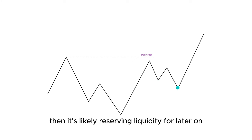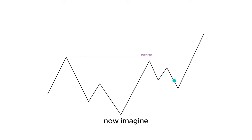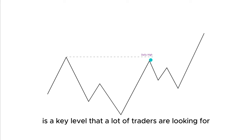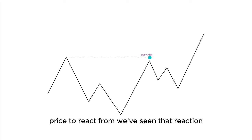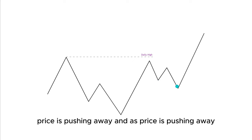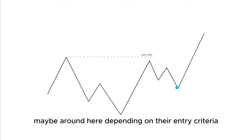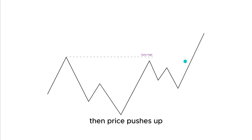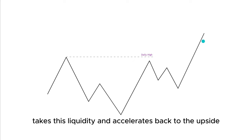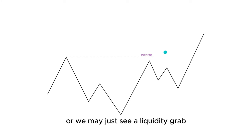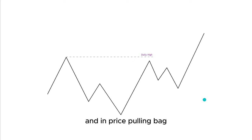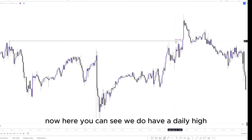If we see price come very close towards this daily high and push away, it's likely reserving liquidity for later on. Imagine this daily high is a key level that a lot of traders are looking for price to react from — we've seen that reaction and price is pushing away. As price pushes away, early sellers are entering the market in their positions, maybe around here or here depending on their entry criteria. Then price pushes up, takes this liquidity, and accelerates back to the upside, or we may just see a liquidity grab and then price pulling back in its original direction.